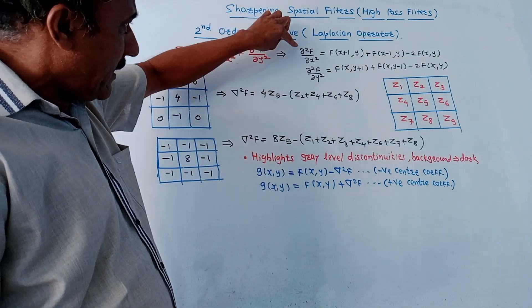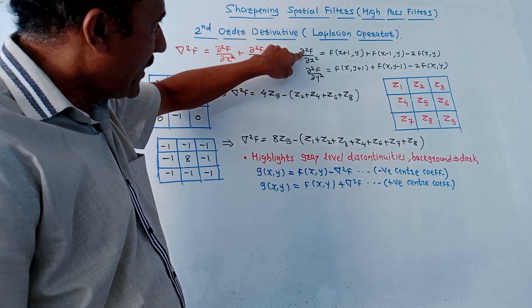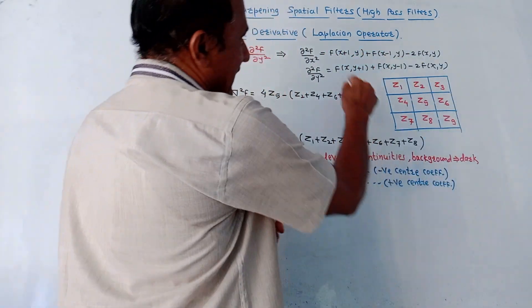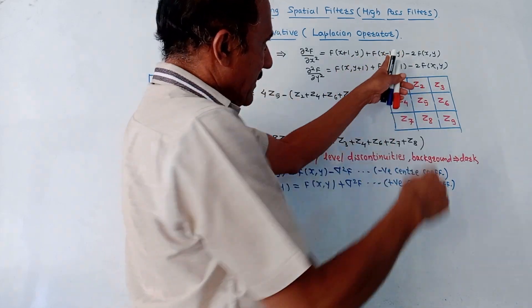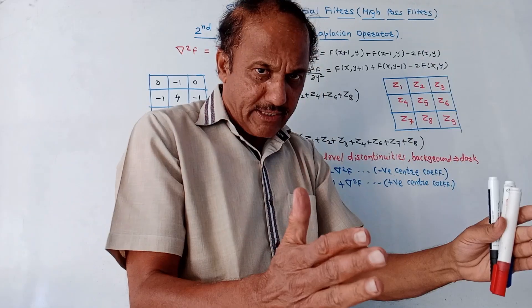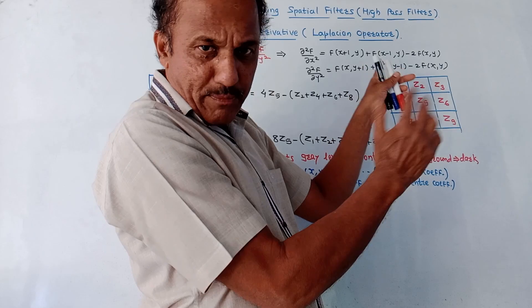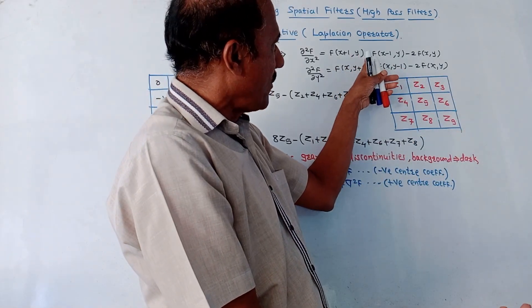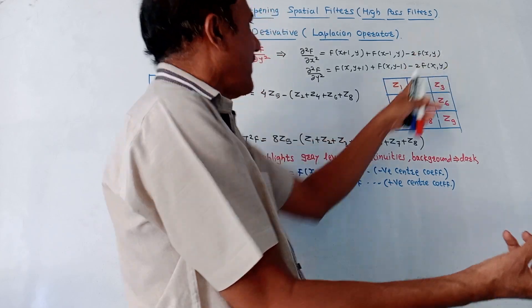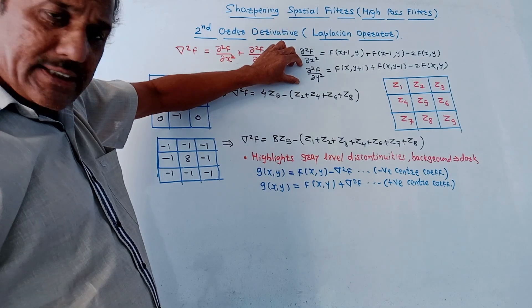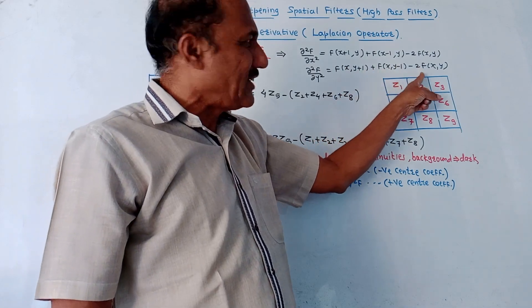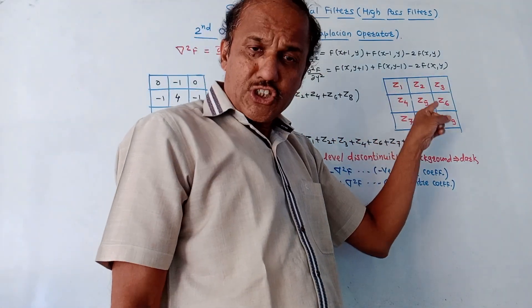For the second order derivative along the x direction: ∂²f/∂x² = f(x+1,y) + f(x−1,y) − 2f(x,y), where f(x,y) is the center value. Similarly, along the y direction: ∂²f/∂y² = f(x,y+1) + f(x,y−1) − 2f(x,y). Take the sum of the left and right (or top and bottom) pixels and subtract twice the center value.